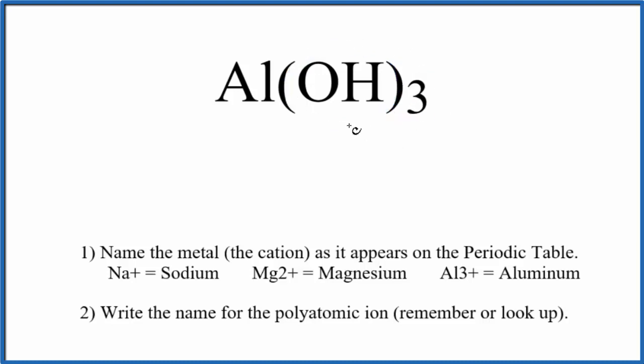So we have this polyatomic ion and then we have a metal, aluminum. We have a metal and these nonmetals, so this is an ionic compound. We're going to name it using these rules right here.